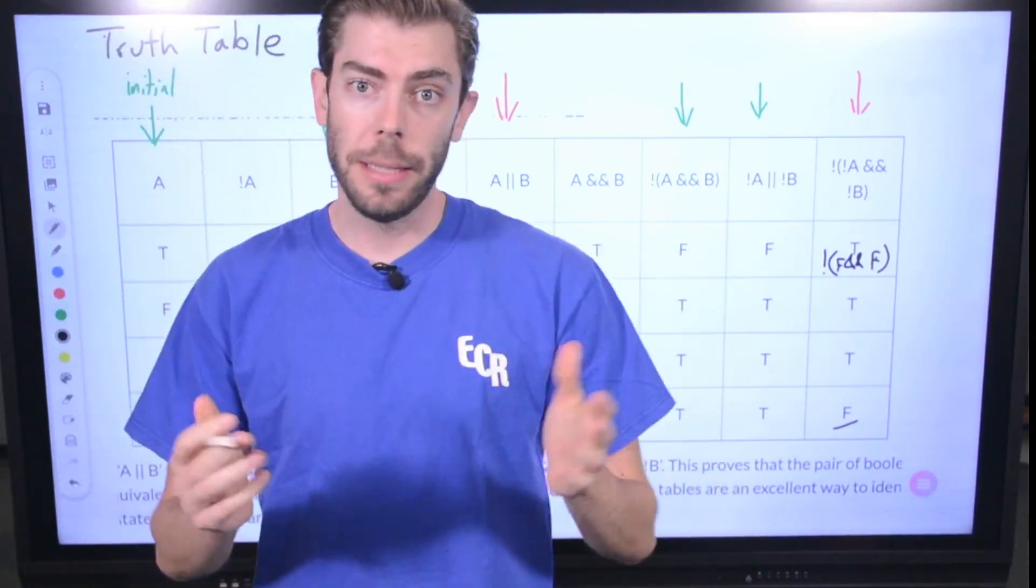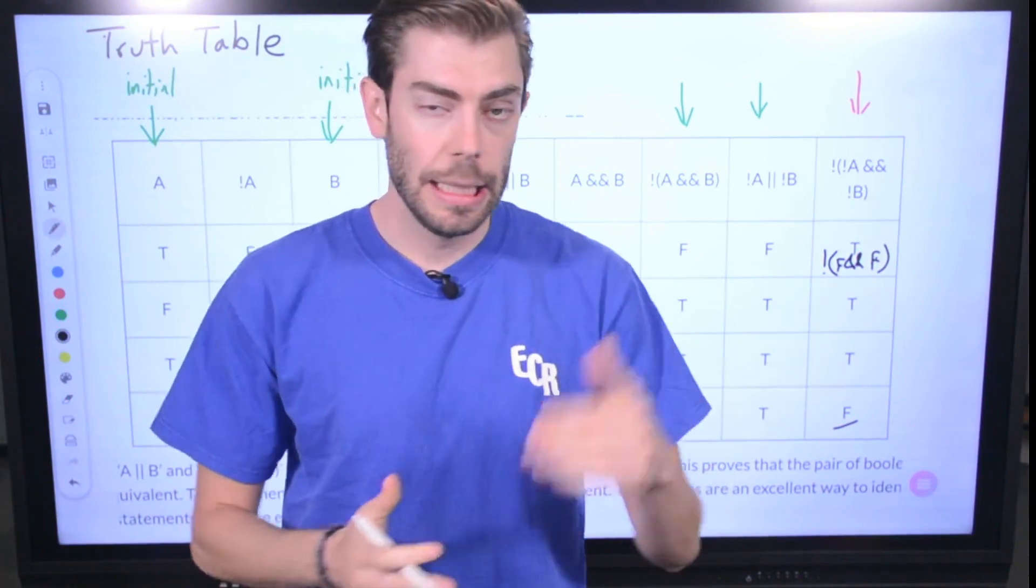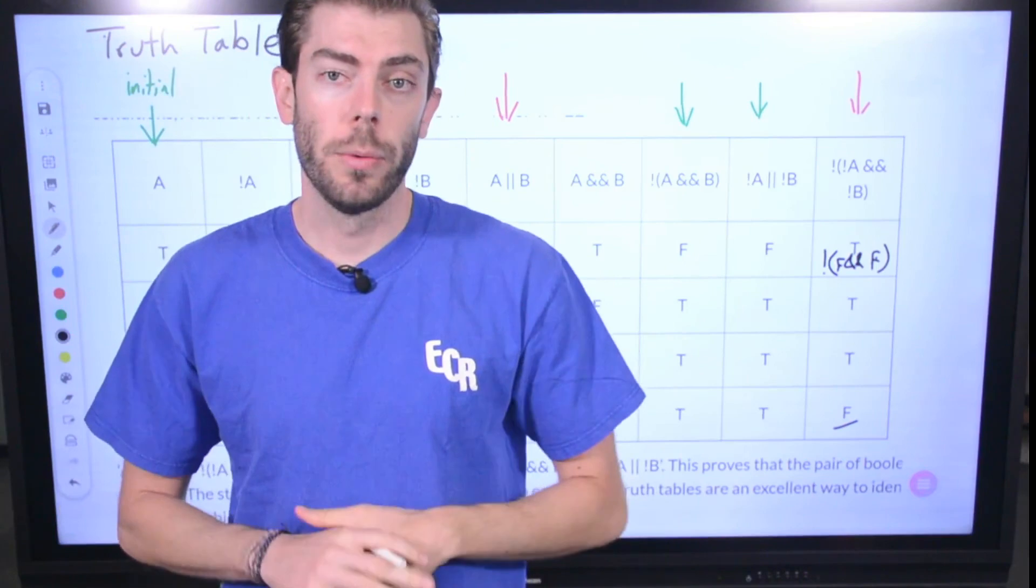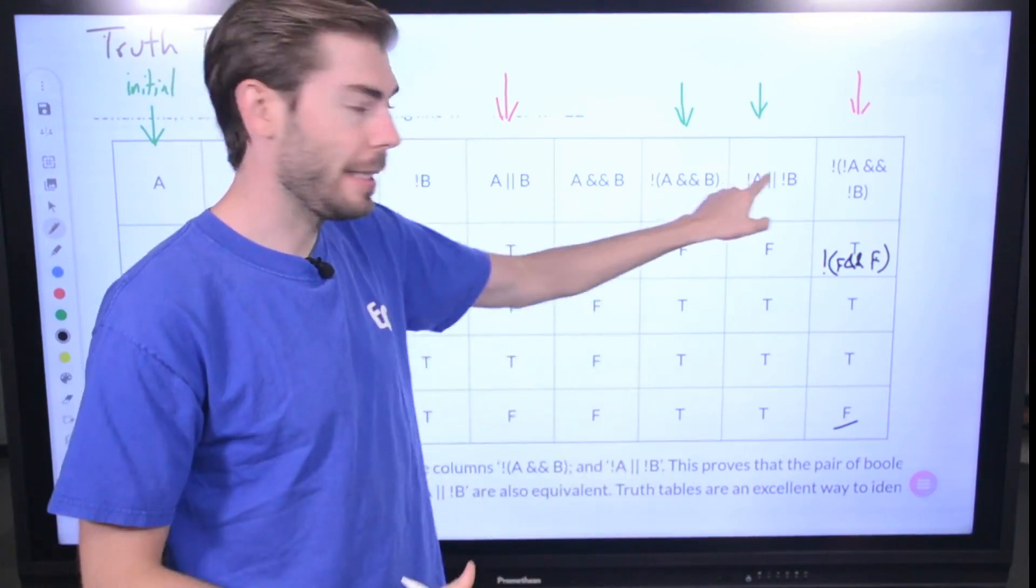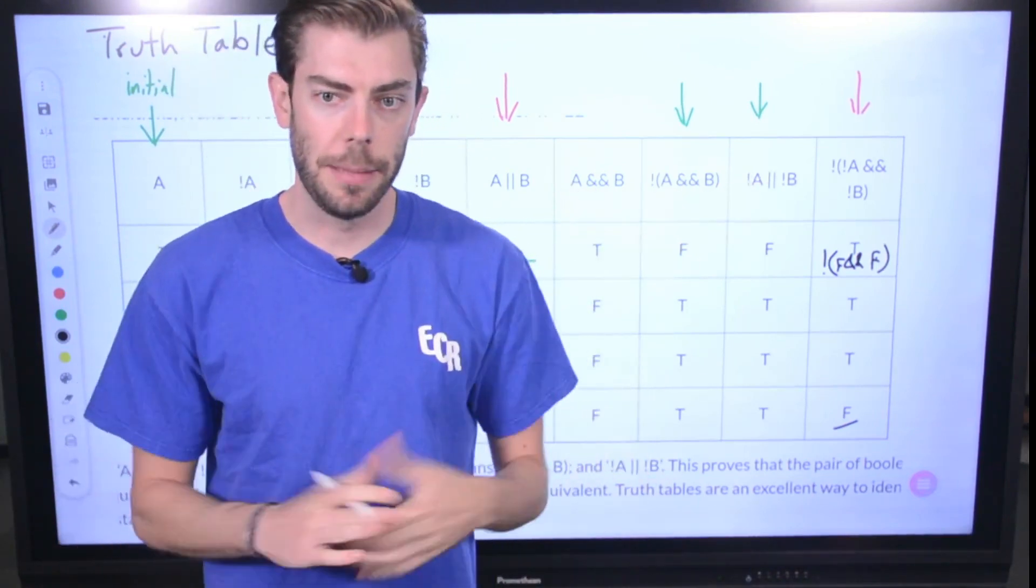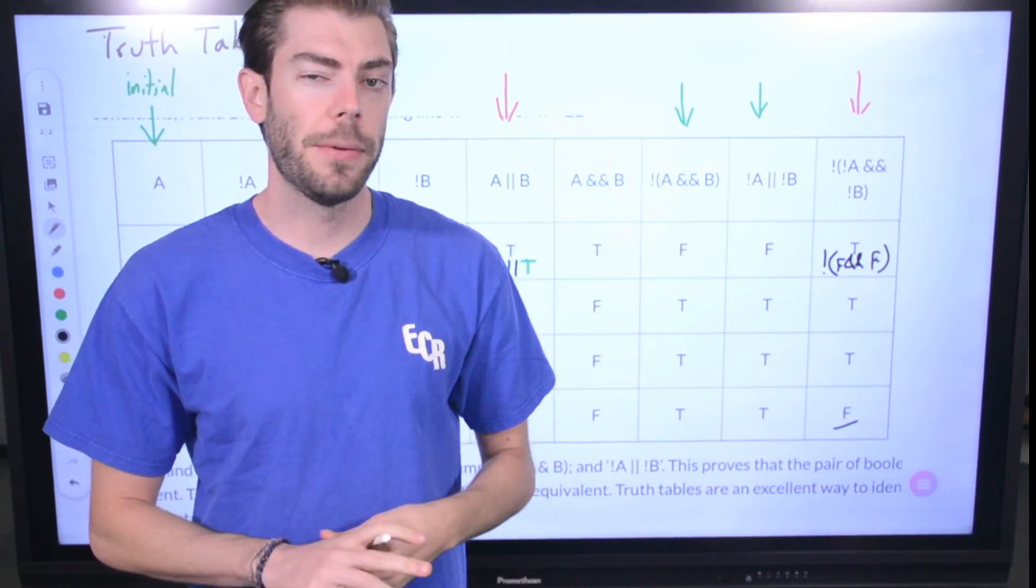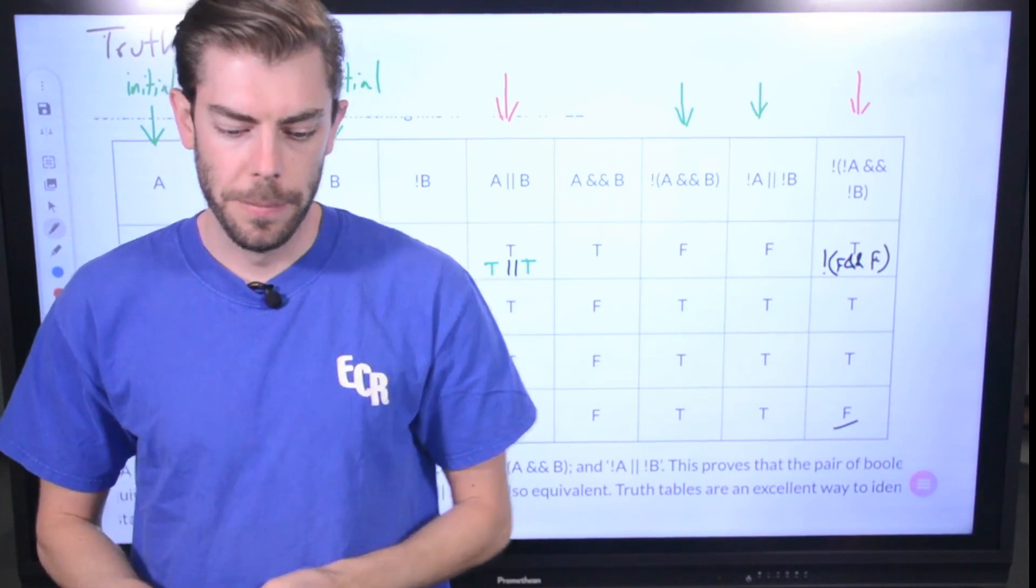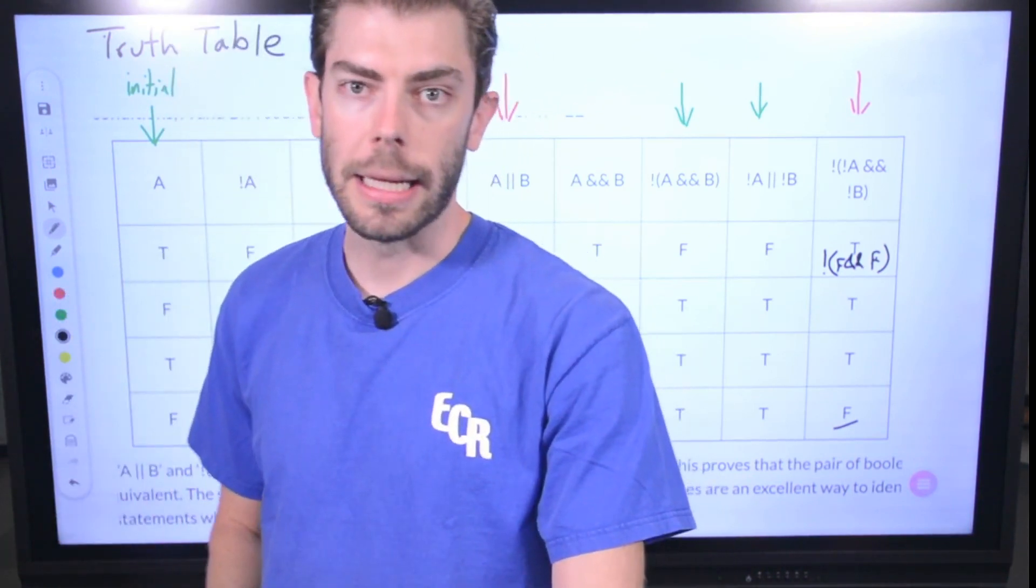Truth tables can actually get really big. We can add a C, a D, and a few other things in there that can make this really fun. These can get really long. These statements can get really long and complex. And we'll talk about some other things that make it a little bit more challenging and also a little bit more simple. All right, I will see you guys in the next one.